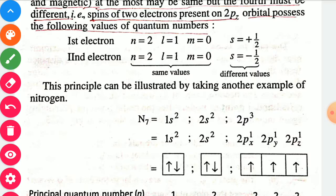The p sub-shell consists of three orbitals: px, py, and pz. Each orbital can hold a maximum of two electrons. During filling, first one electron is placed in each orbital, and then if electrons remain, a second electron is added to each orbital with the opposite spin.